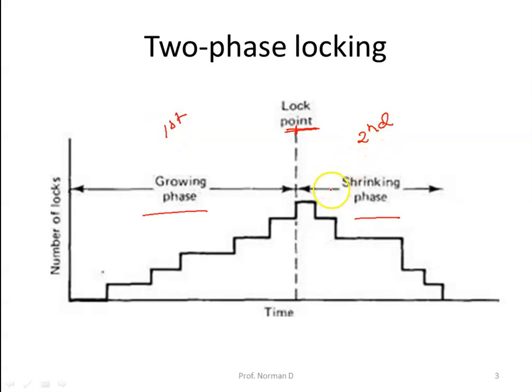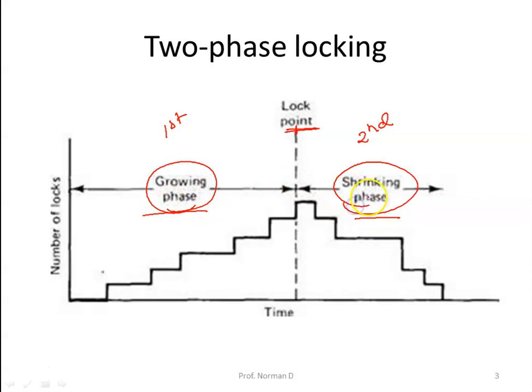In the second phase, the process releases all the locks it has applied on the files. This is called the shrinking phase. So the first phase is the growing phase and the second phase is the shrinking phase.